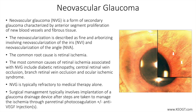NVA typically occurs first at the base of the iris, taking the form of individual vascular trunks that cross the ciliary body and scleral spur, and over the corneoscleral trabecular meshwork. Eventually, a fibrovascular membrane forms that is contractile and produces localized anterior synechiae, with progressive zipping of the angle as the disease progresses.